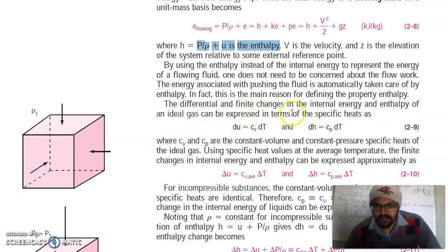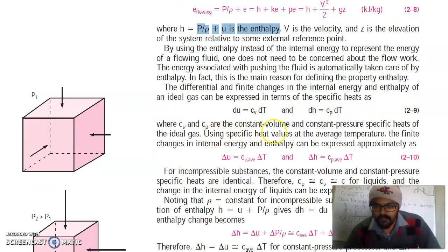The differential and finite changes in internal energy and enthalpy of an ideal gas can be expressed in terms of specific heats. So du equals Cv dT and dH equals Cp dT, where Cv and Cp are constant volume and constant pressure specific heats of ideal gas. Using specific heat values at the average temperature, the finite change in internal energy and enthalpy can be expressed approximately as: change in internal energy equals Cv average times change in temperature, and change in enthalpy equals Cp average times change in temperature.